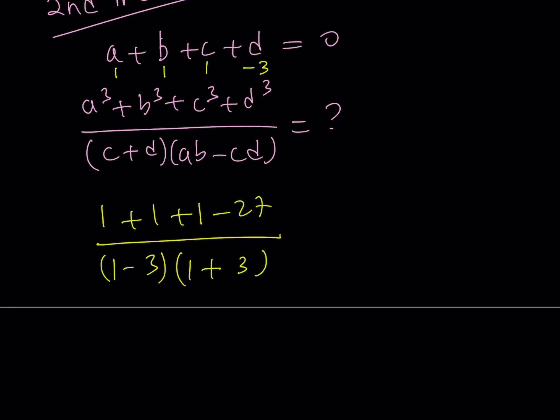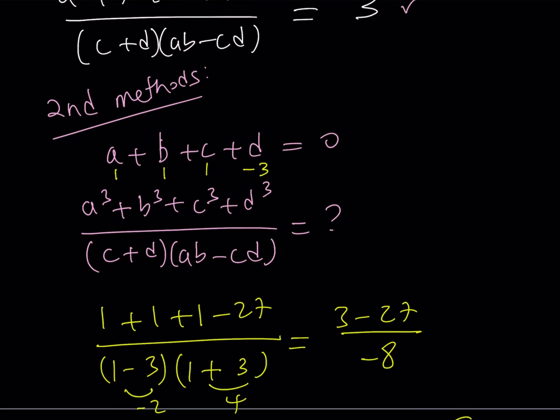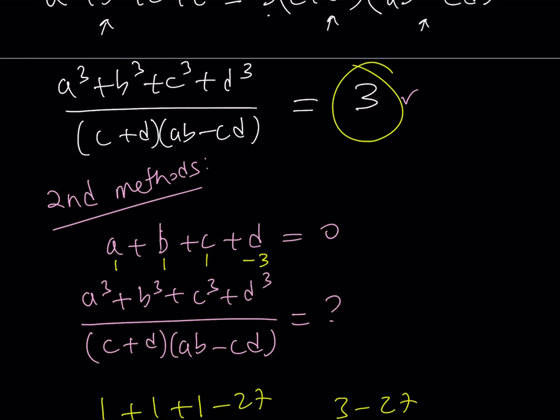So I have to subtract negative three, which means I have to add three. So now the numerator becomes three minus 27. And here I get a negative two and a four. And their product is just going to be negative eight. So from here, I'm getting negative 24 divided by negative eight, which is equal to positive three. That's basically the same answer that we received before because we are supposed to get the same answer.